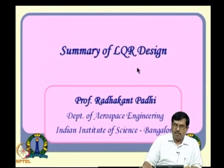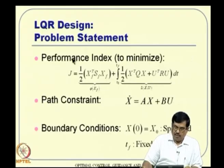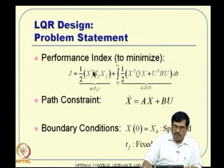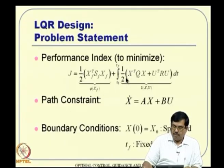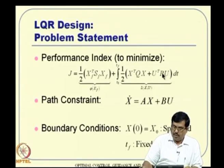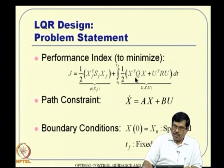First, a brief summary of the LQR design from the last class. The performance index in LQR formulation is: half X_f transpose S_f X_f — the terminal cost phi(X_f) — plus the integral from T_0 to T_f of half of X transpose Q X plus U transpose R U. We discussed that R must be positive definite, Q must be positive semi-definite, and S_f must be positive semi-definite, along with guidelines for selecting S_f, Q, and R.